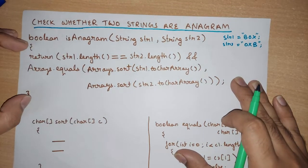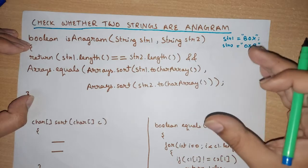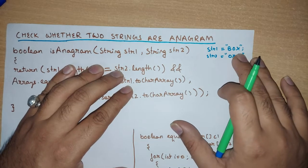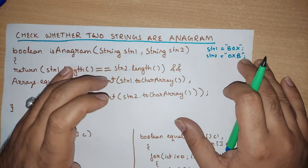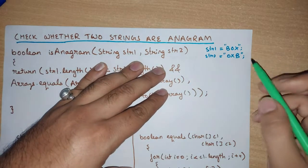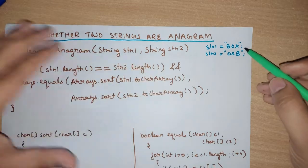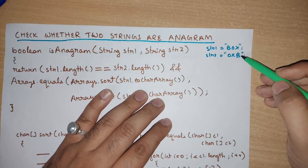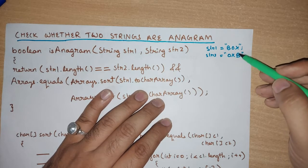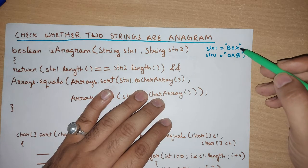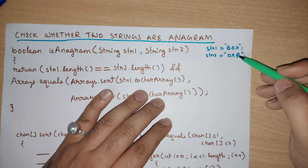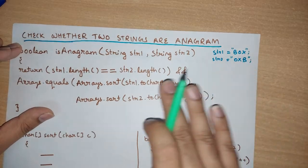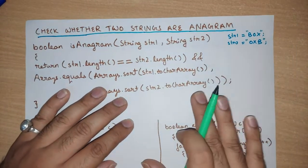Before explaining the program, let me tell you what an anagram is. Let's suppose we have two strings: str1 and str2. In str1 we have 'box' and in str2 we have 'oxb'. Both 'box' and 'oxb' have the same number of characters and the same length, but their ordering is different. This is what an anagram is — same characters and length, but different ordering.